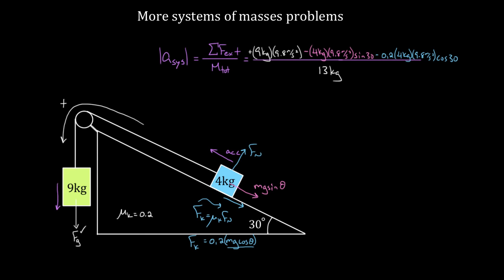You might object and ask: what about the tension force? Well, that's an internal force. The whole benefit of treating this two-mass system as if it were a single mass is that we don't have to worry about these internal forces. Yes, that tension is there, but on one side it's resisting the motion, and on the other side it's helping the motion — so the internal forces cancel. By treating this two-mass system as a single object, we get to neglect internal forces because they always cancel.